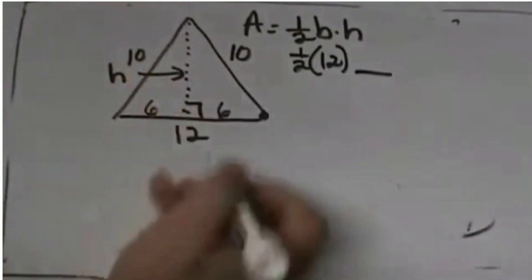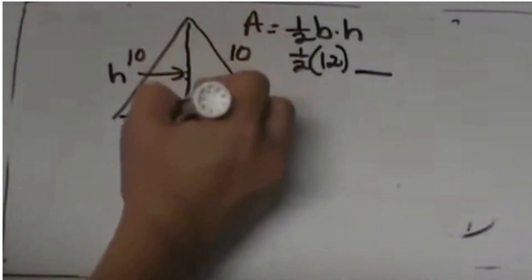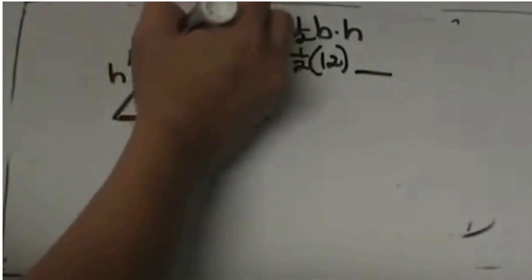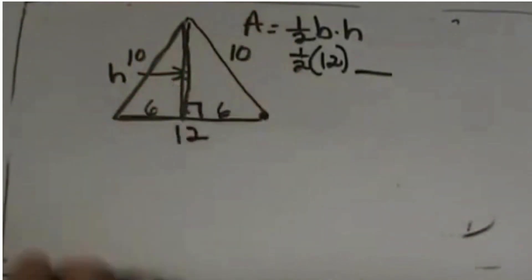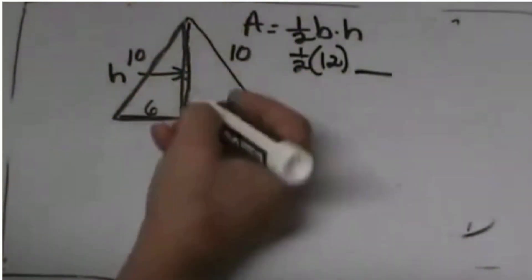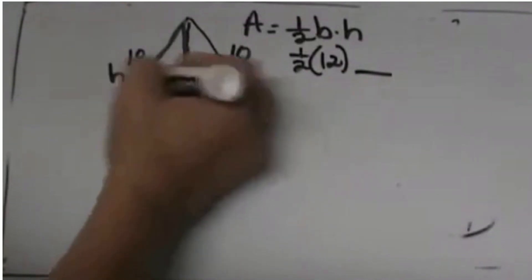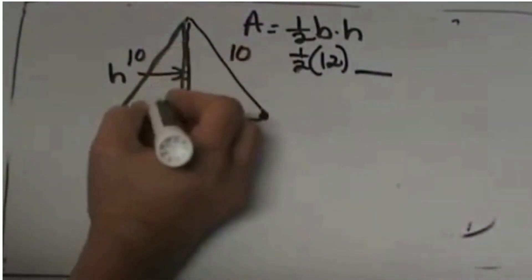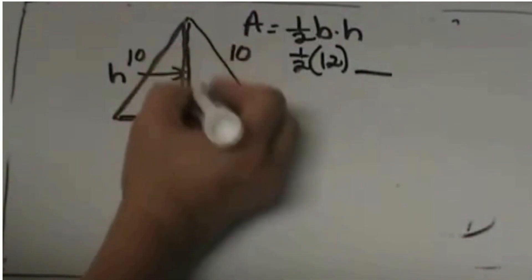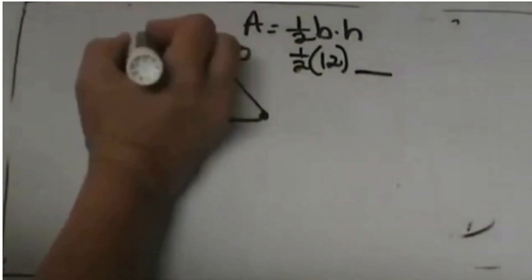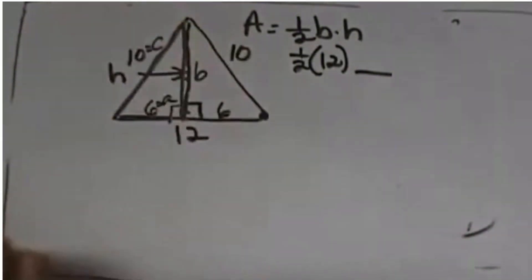Now I can use the Pythagorean Theorem using this right triangle to find the height. So I am missing one of the legs. I am going to call 6, a; the unknown height is b; and c is 10.